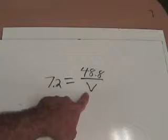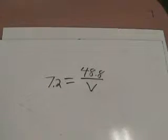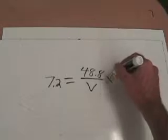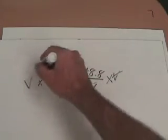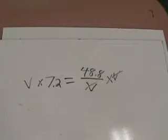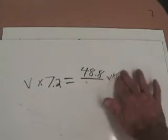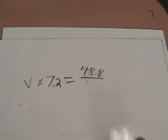Now the way I like to do this is I'm going to multiply both sides by V. So if I multiply this side by V, it cancels out, and I multiply this side by V. So what I have now is V times 7.2 equals, since these cancel out, equals 48.